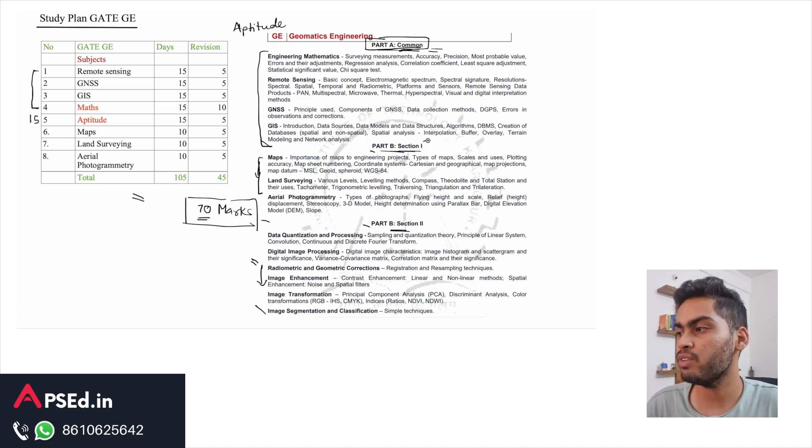But if you are from civil background and you have studied some of these topics, we would say you stick with Section 1 of Part B. Here you have the remaining 30 marks, the last three topics. You can see how these marks are fairly distributed. It will be 10, 10, 10, and these four topics are about 10 to 12 marks from each topic.